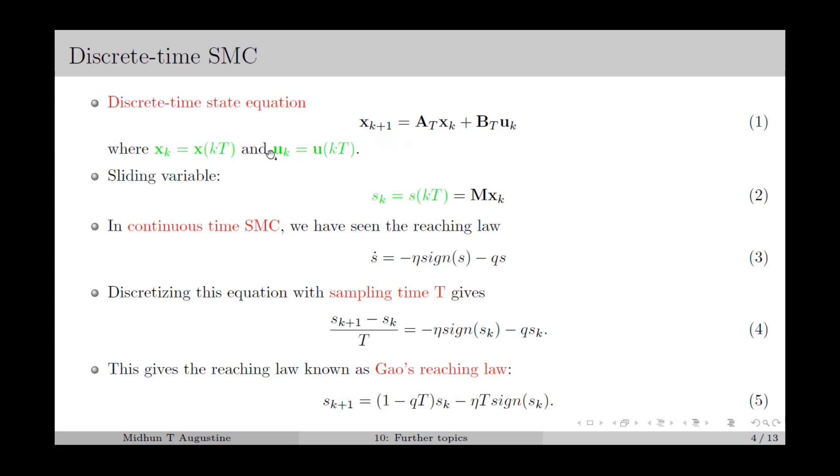Similarly, u_k is the discrete-time control input vector. A_T and B_T are the system matrix and input matrix in discrete time, where T denotes the sampling period.